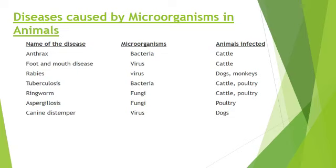Next is aspergillosis. This is again caused by fungus and it occurs in poultry, meaning birds. This is a respiratory disease that affects the lungs. The next is canine distemper — this is a viral disease that occurs mainly in dogs. In this case, fever occurs and there is a nasal discharge, meaning discharge from the nose.